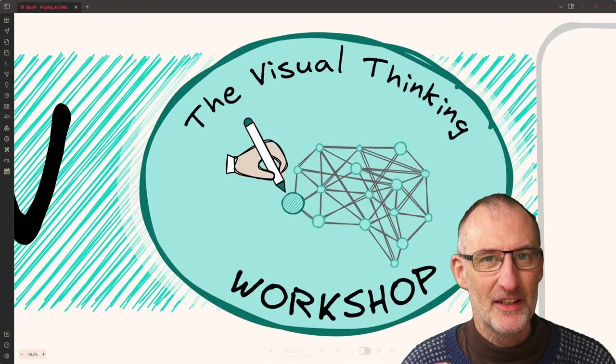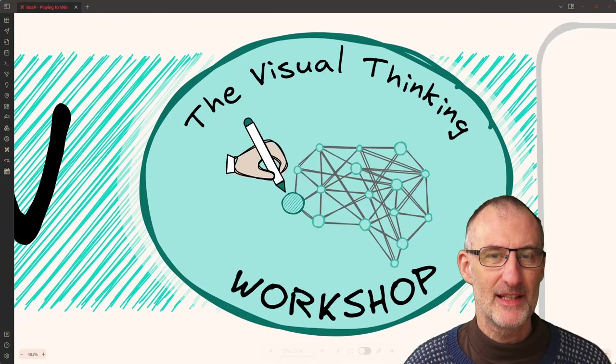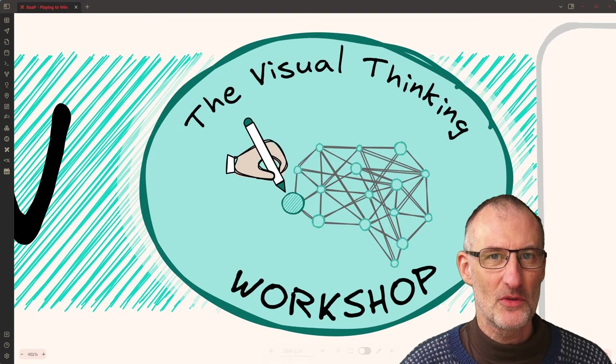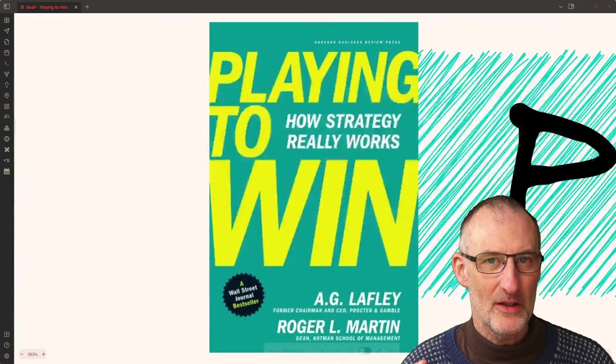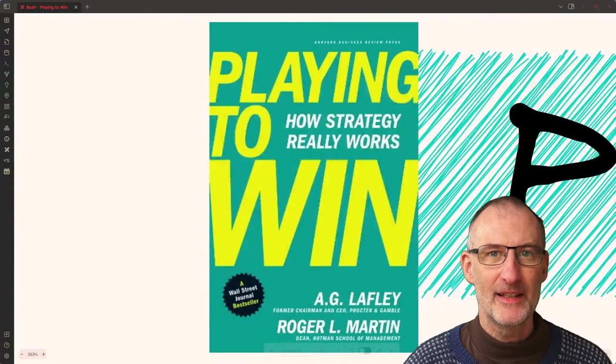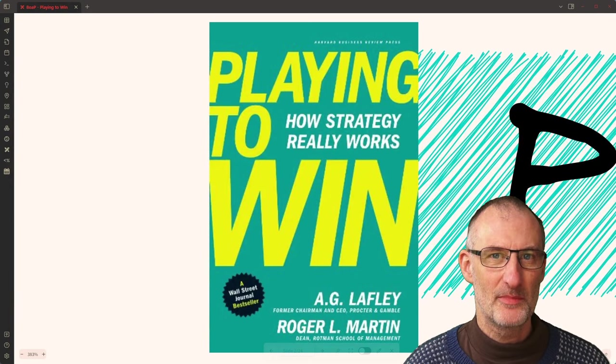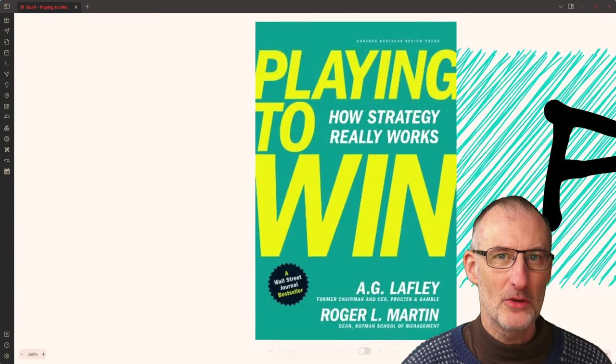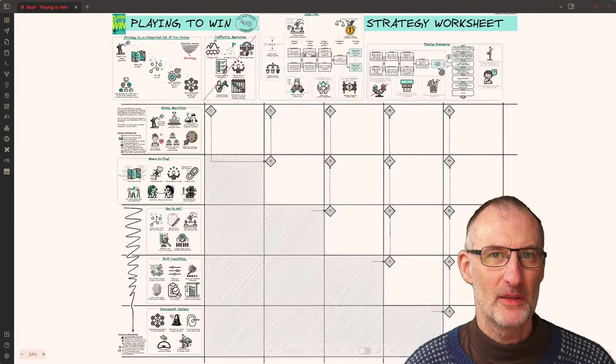Hey everyone, Jolt here. Today is the final closeout session of cohort 6 of the Visual Thinking Workshop where we all read Playing to Win, How Strategy Really Works by Roger L. Martin, and we all created our book on a page summaries.